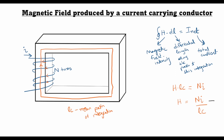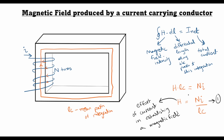Let's call this equation number one. In this equation you can see that H, the magnetic field intensity, is the effort of current in establishing a magnetic field. So H gives a relation in terms of the current, the number of turns, and the mean path length, and thus it can be considered as an effort of the current in establishing the magnetic field.